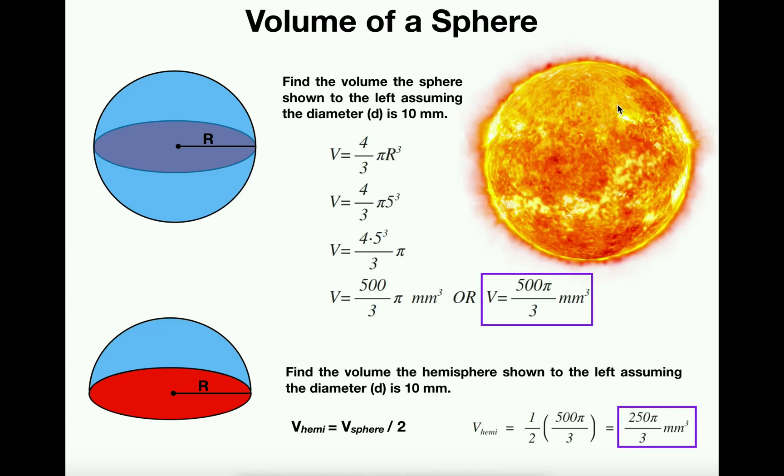A good example of something that at least approximates a sphere is a planet or a star. This is our Sun. And so we can calculate the volume of that sphere using the radius, and it's actually a fairly simple calculation.